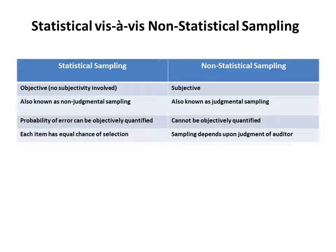In statistical sampling, all items have equal chance of selection. Whereas in non-statistical sampling, it is done on the basis of some judgment of the auditor. For example, if an auditor feels that one particular employee is more prone to error, he will select a sample from the cases processed by that particular employee. So here, subjectivity and judgment of the auditor is involved.